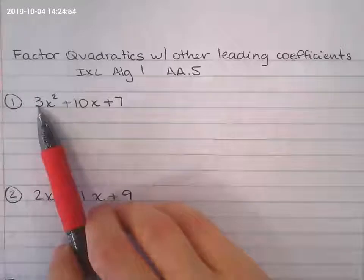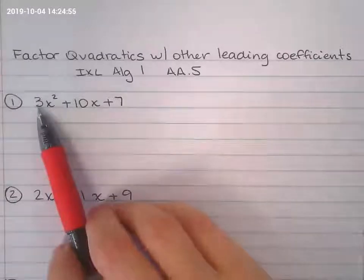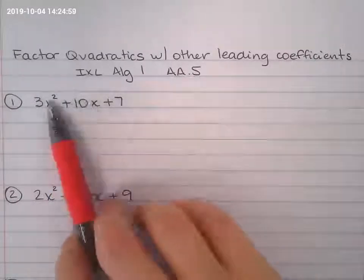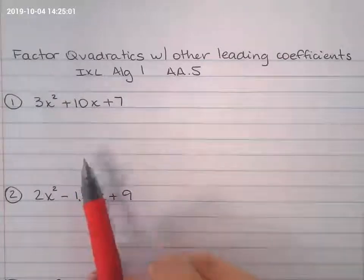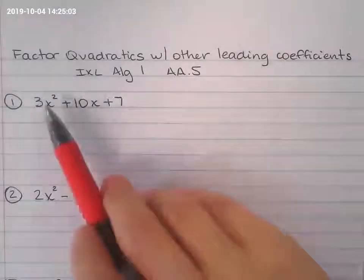So the first thing you need to look for is see if you can find the greatest common factor. If there's anything they have in common that I'll be able to factor out before I even start factoring the quadratics. In this case, between 3, 10, and 7,